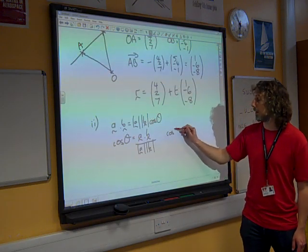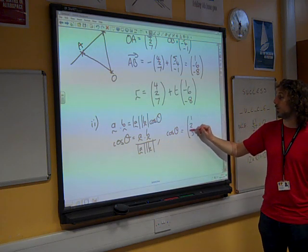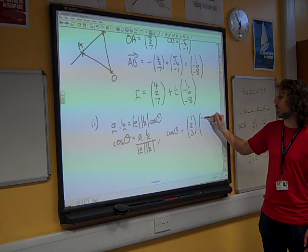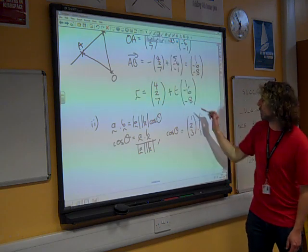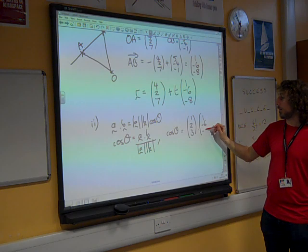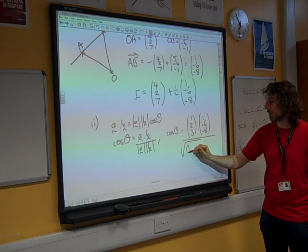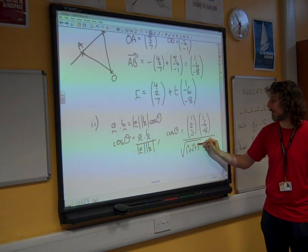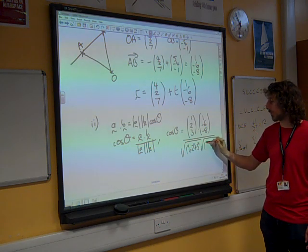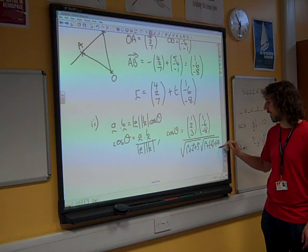So, cos theta is 1, 2, 3 dotted with 1 minus 6 minus 8 over the square root of 1 squared plus 2 squared plus 3 squared times the square root of 1 squared plus minus 6 squared plus minus 8 squared.